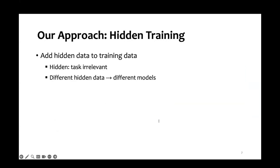Now let's look at our approach, hidden training. The idea is that although we cannot get new task training data, we can use task-irrelevant data to create different model versions. Those task-irrelevant data are called hidden data. By adding different hidden data, we can get different model versions.